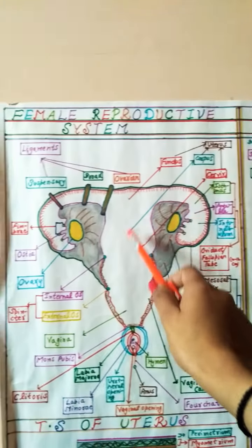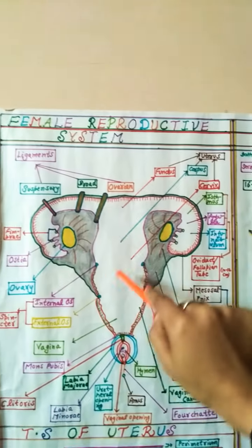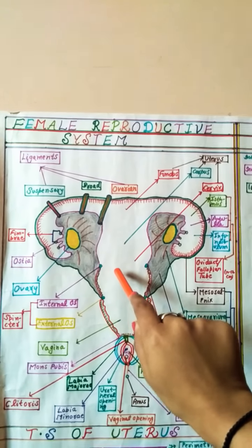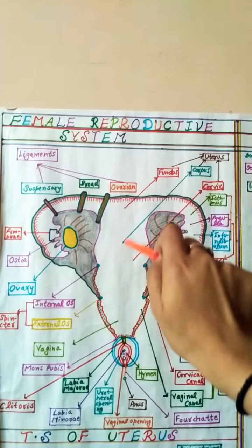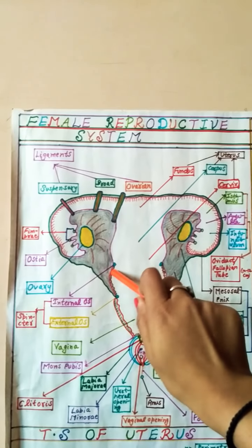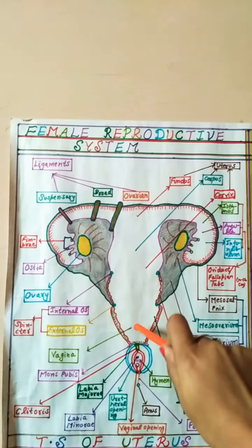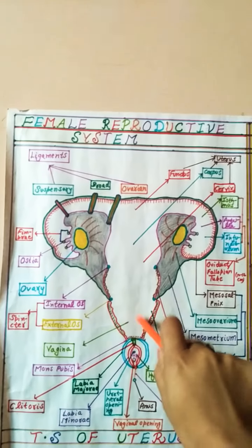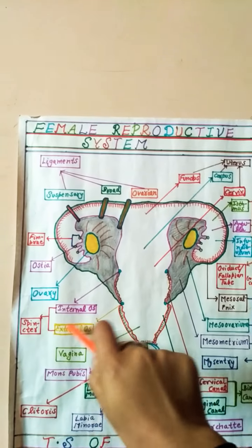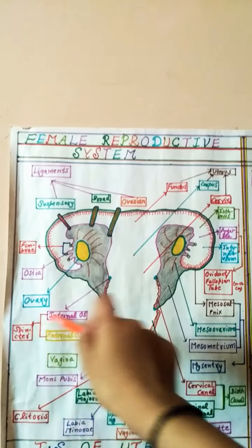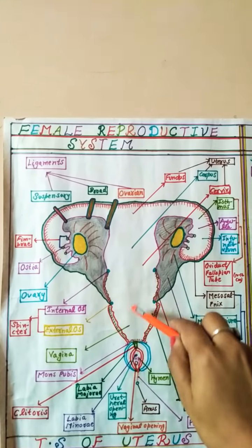In this diagram you can also see the internal os and external os. The cervical canal is separated from the corpus portion of the uterus by the internal os, and separated from the vagina by the external os. These os are essentially sphincters of the female reproductive system.